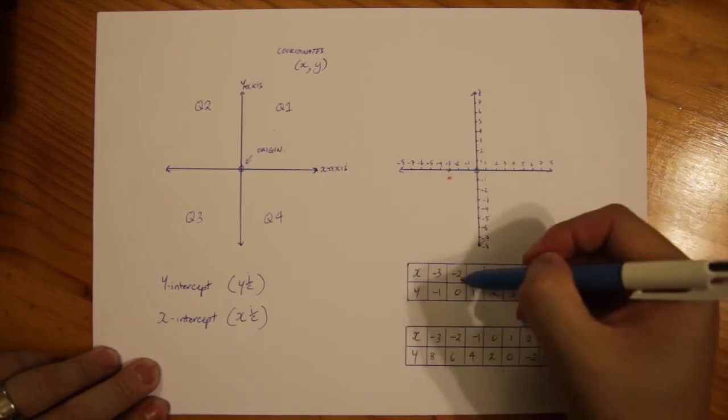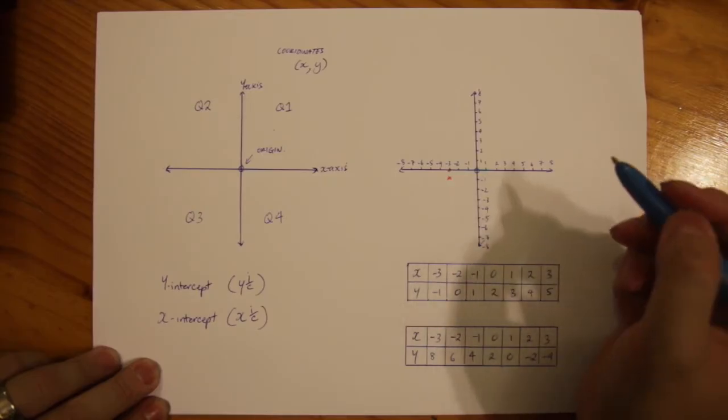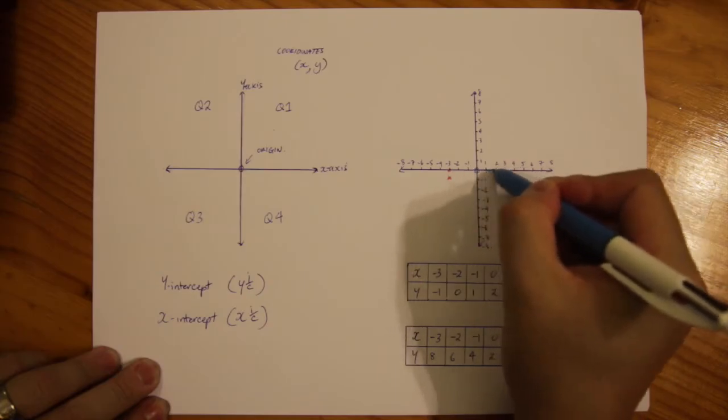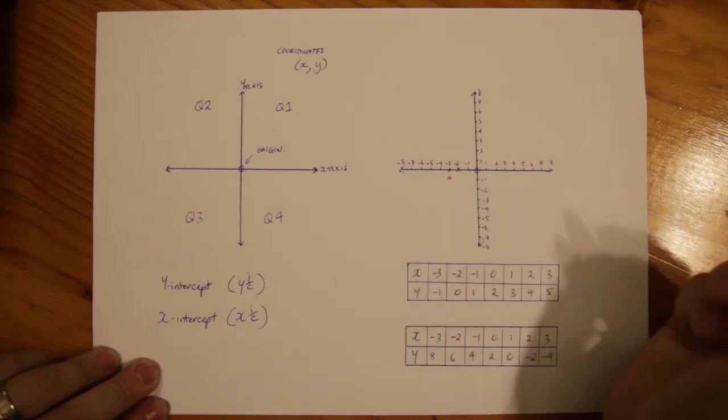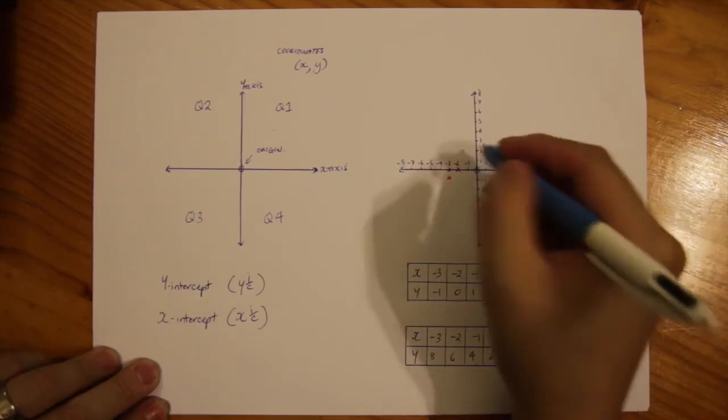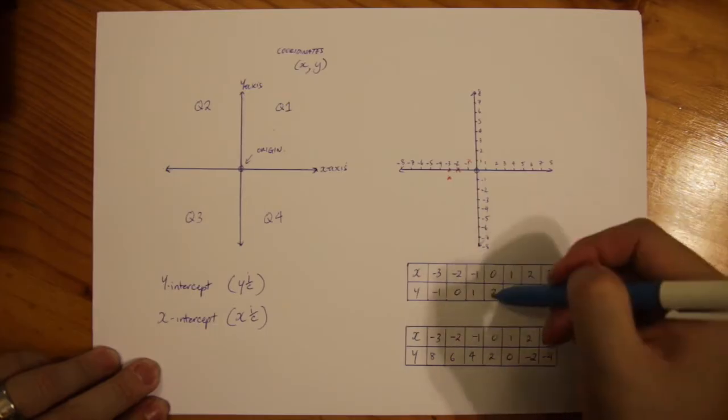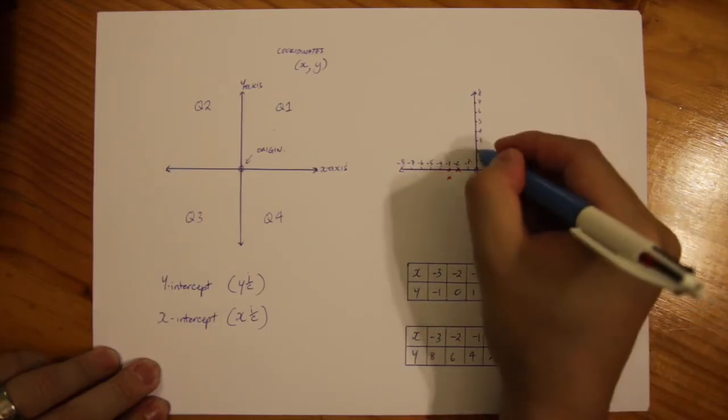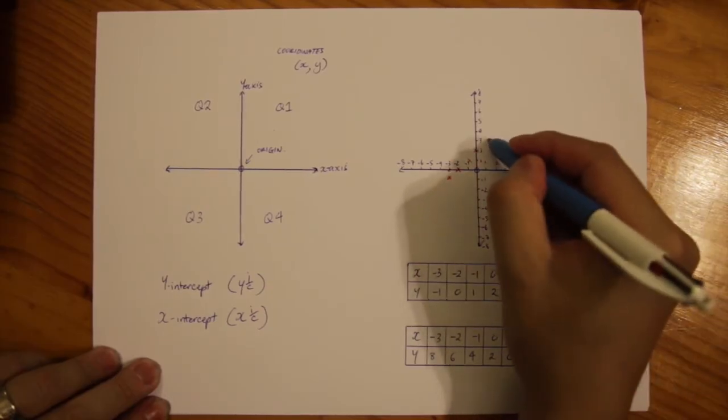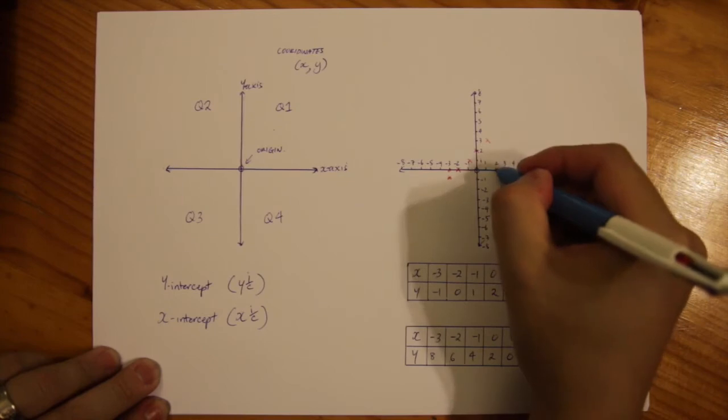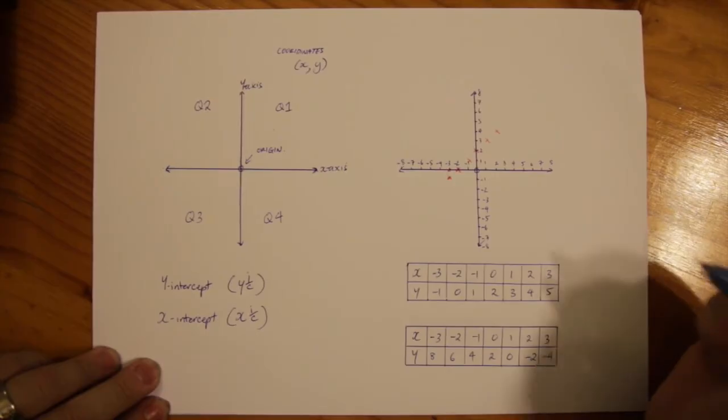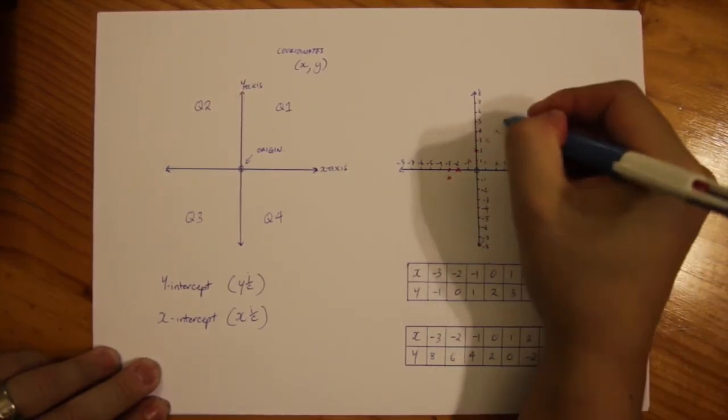Next one, minus 2 for x and then 0 for y. So minus 2 for x and then 0 for y which is here. We have then minus 1 and 1. So minus 1 and 1. 0 and 2. One and 3. Two and 4. Two and 4. And then three and then five. Three and then five.